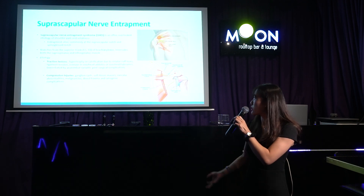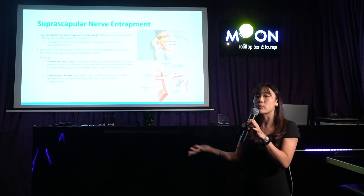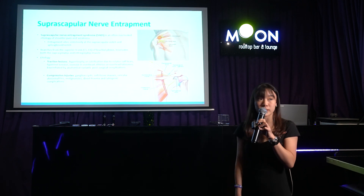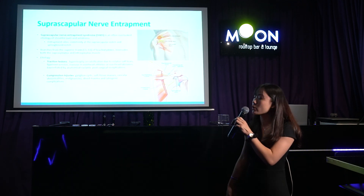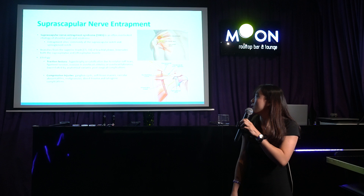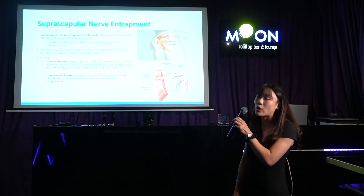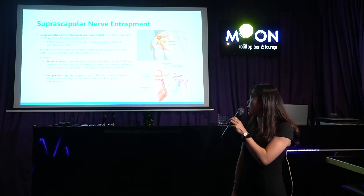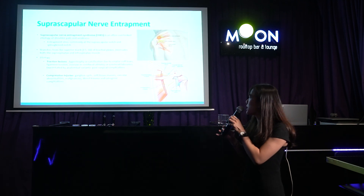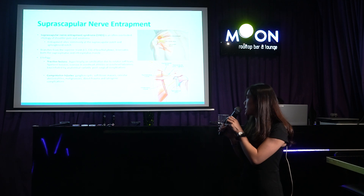There are two main injury types. Traction lesions can arise from hypertrophy, compression from rotator cuff tears, ligament tension, or overuse in overhead athletes, and also from post-operative complications. Compression injuries include ganglions, vascular abnormalities, or malignancies.